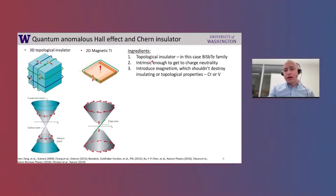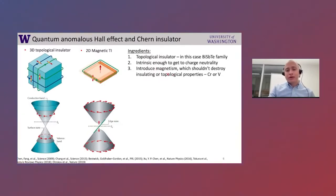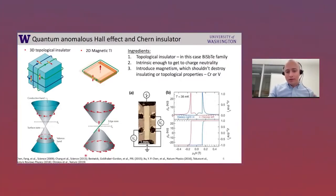The ingredients for building such a material: currently people use bismuth telluride-type materials, which are very well-studied. You need to carefully tune them so they are intrinsic — with the Fermi level lying in the gap — and introduce magnetism carefully without destroying the topological aspects. Over the last 10 years there has been a lot of progress in chromium and vanadium doping of these topological insulators. This was eventually experimentally demonstrated in a paper by Chang and co-authors in Science in 2013.